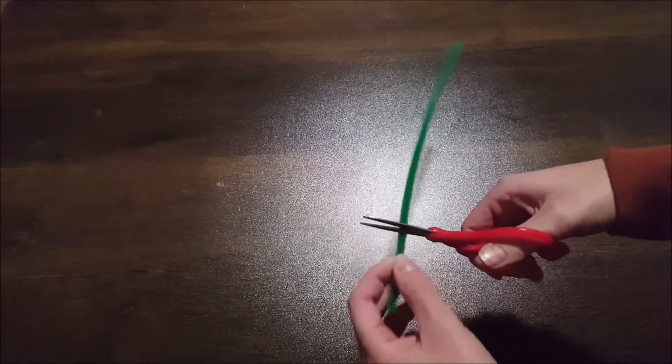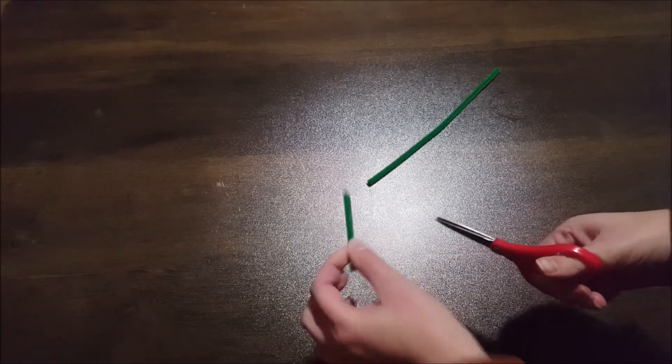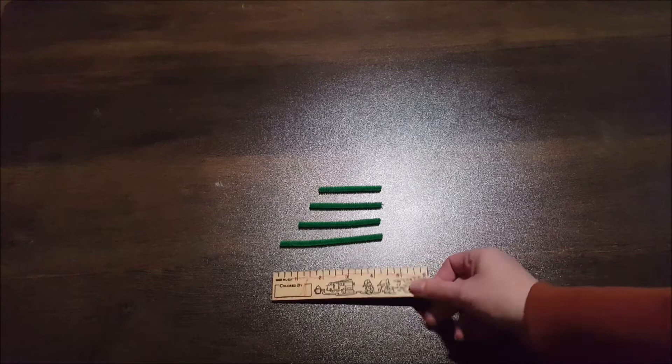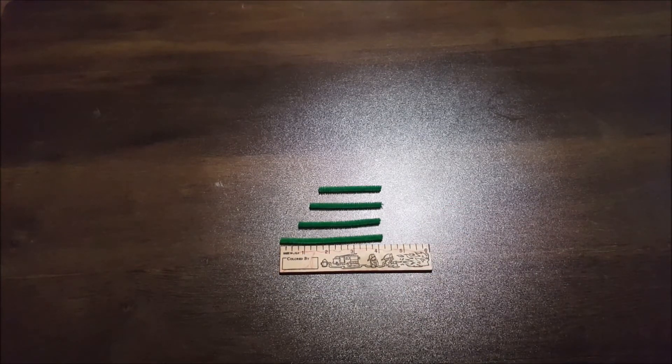The first step is to cut our pipe cleaner into four differently sized pieces. Once done cutting, you should have four differently sized pieces, each one about half an inch larger than the piece before it.